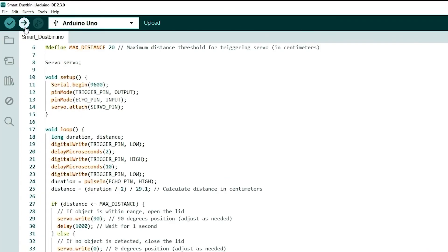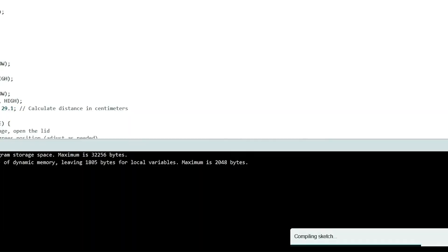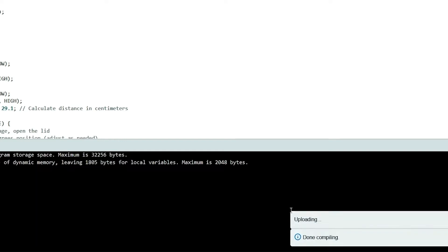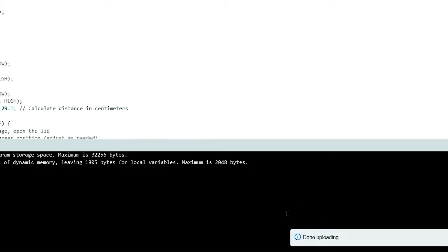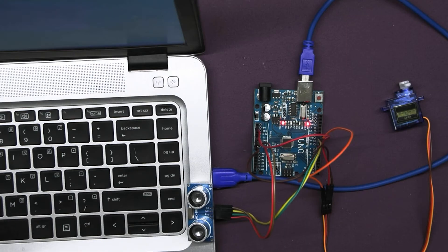Now upload the code by clicking the upload button. You can see the sketch is first verified by the compiler and then uploaded to the Arduino. It's time to check that our circuit is working or not.